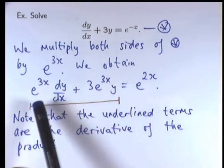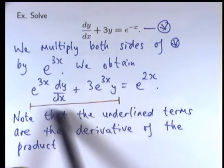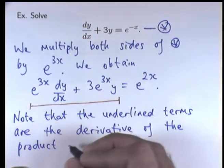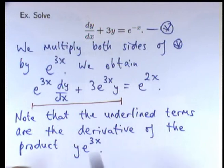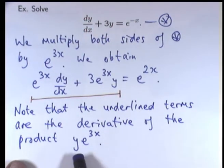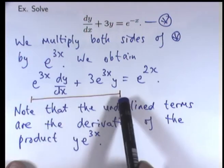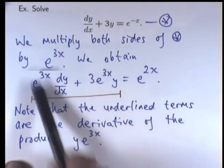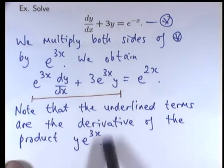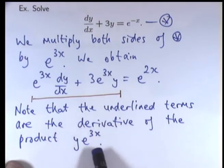It's going to be y times e to the 3x. If you differentiate this product — remembering y is a function of x — by the product rule, you'll get the left-hand side expression. So what we're going to do is collapse this left-hand side down to the derivative of y times e to the 3x, and then we can actually integrate both sides.